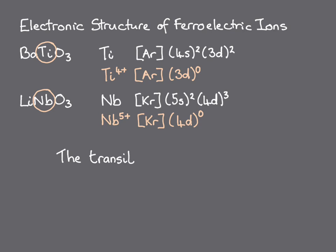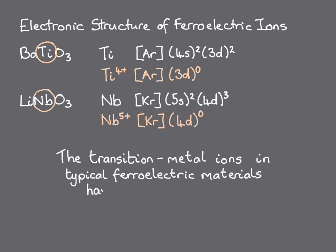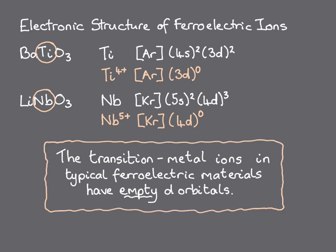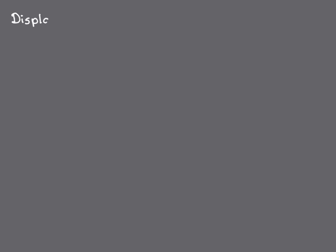It's an empirical observation, then, that the transition metal ions in ferroelectric materials have electronic structures with empty d orbitals.